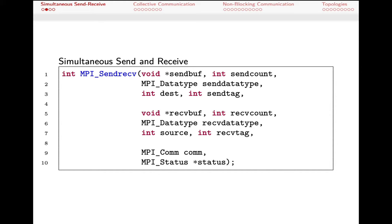The arguments to MPI_Sendrecv are grouped by relationship. The first group covers the send buffer: a pointer to the first byte, the number of elements, and the data type — for example, MPI_INT for an array of integers. We also specify the destination rank and the send tag. There's a similar set of arguments on the receive side: a buffer for incoming data, the number of elements, the data type, the source rank, the expected tag, and finally the communicator — typically MPI_COMM_WORLD.